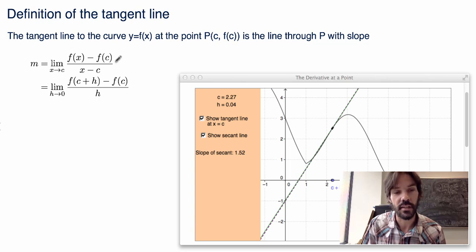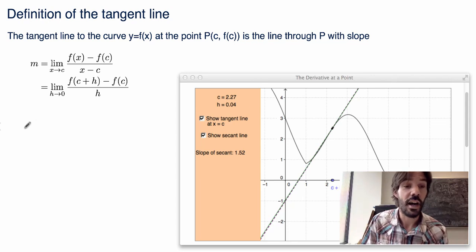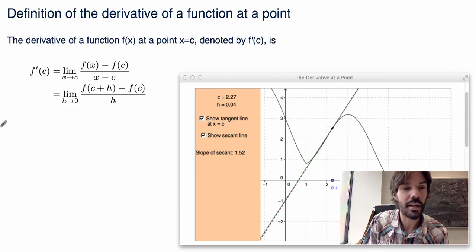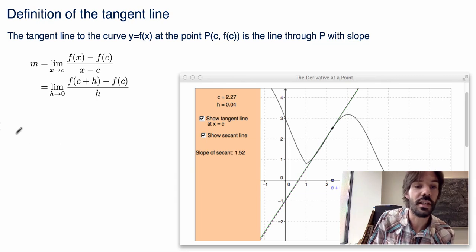Or I could rewrite it in exactly the same way as this, where I'm just replacing c plus h by x. So I'm letting the coordinate of the other point be x instead of c plus h. But here it is. How great is that? If you go back two slides ago, we had the definition of the derivative. Well, it's just exactly the same thing, right? Just look at it and you see that in fact,